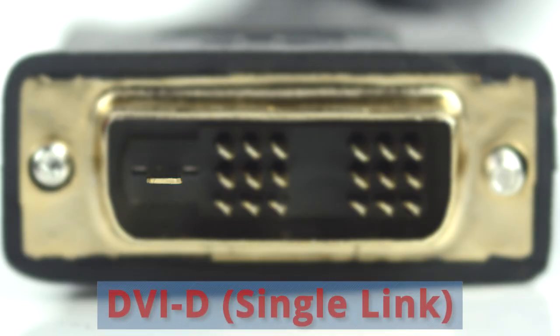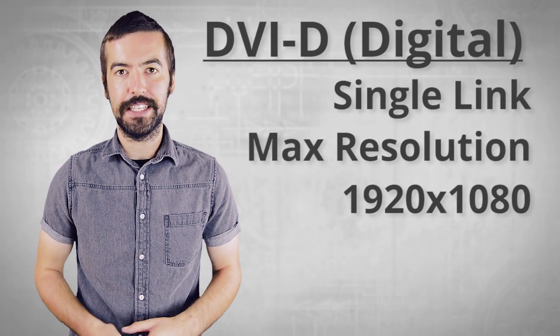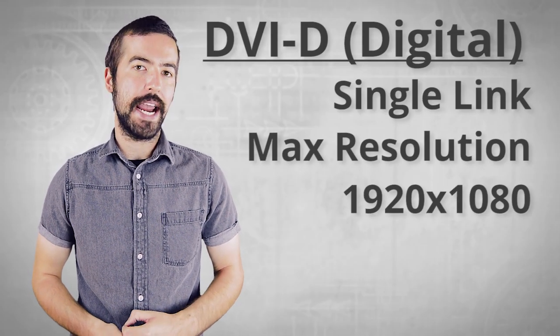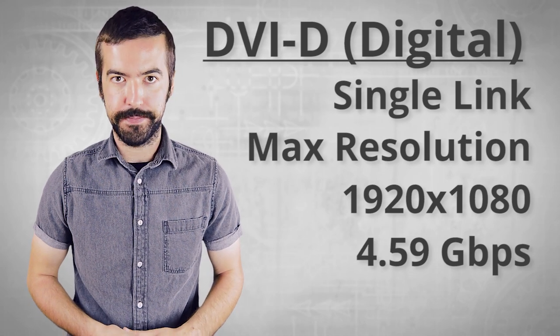DVI-D is available in two styles: Single Link and Dual Link. DVI-D Single Link uses a pin arrangement of a single flat pin and two blocks of pins, each with nine apiece. It is capable of a maximum resolution of 1920x1080 at 4.59 Gbps.